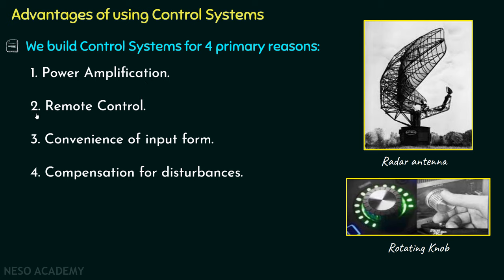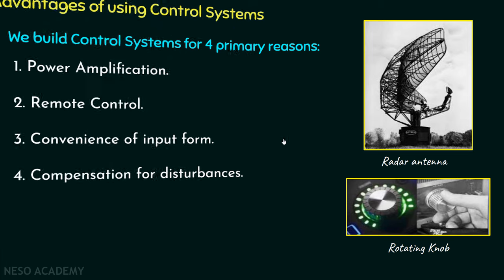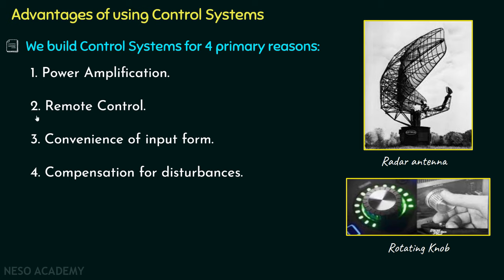The second reason is remote control. Whenever we need to rotate the radar antenna, we use a rotating knob, which acts as a remote control element for the antenna. Another example: a remote-controlled robotic arm that can be used to pick up materials from a radioactive environment. So control systems are also useful in remote areas.